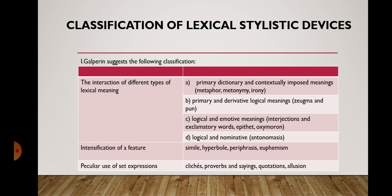In the previous lecture we discussed the classification of lexical stylistic devices and we started considering the first criterion — the interaction of different types of lexical meaning, exactly the first sub-point: primary dictionary and contextually imposed meanings. The interaction of primary and derivative logical meanings, and the interaction of logical and emotive meanings.